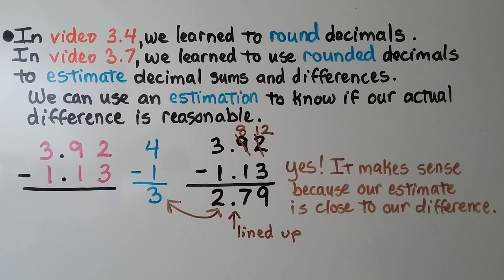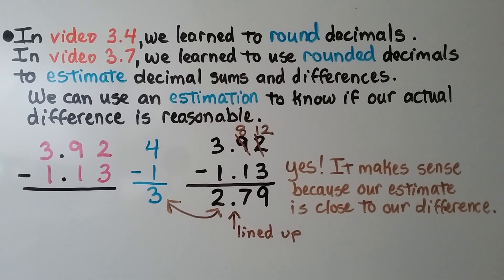In video 3.4 we learned to round decimals, and in video 3.7 we learned to use rounded decimals to estimate decimal sums and differences. They're linked in the description if you missed them. We can use an estimation to know if our actual difference is reasonable.